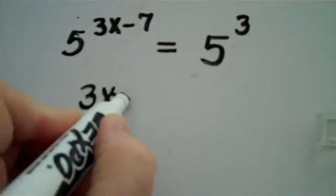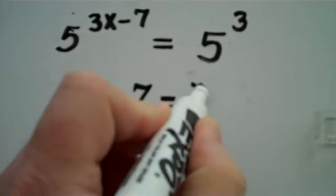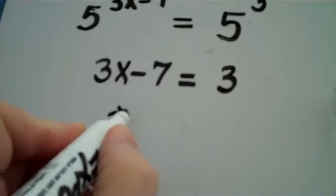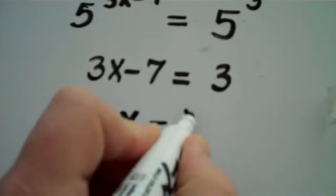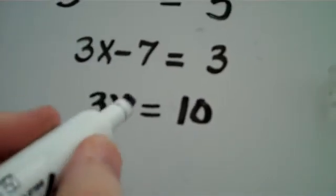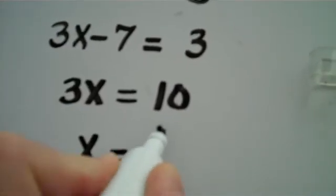3x minus 7 is equal to 3. And we finish. Very simple linear equation now. 3x is equal to 10. Paper's blowing away. There, I grab it. x is equal to 10 thirds.